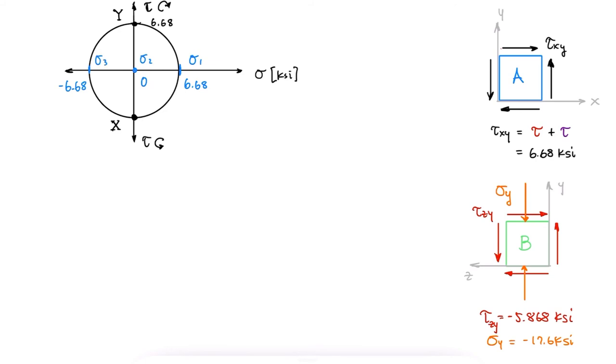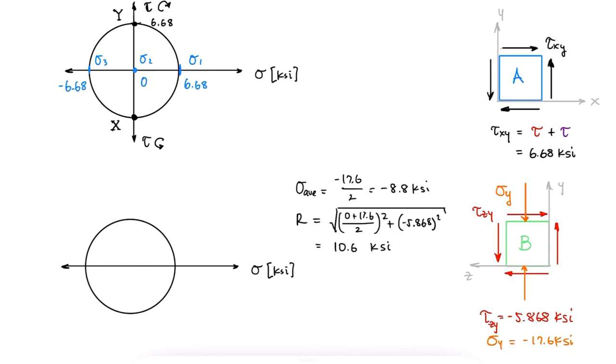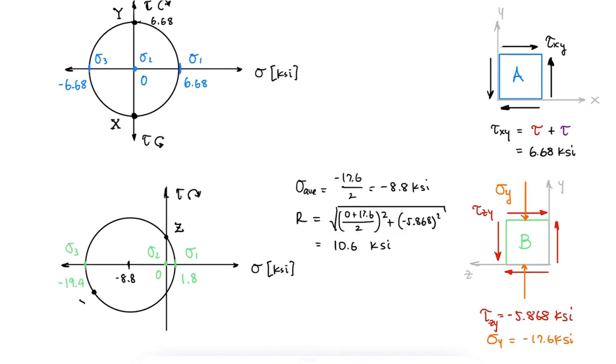And for element B, which has a sigma average of minus 8.8 and a radius of 10.6, we see that the center of the circle is located at minus 8.8, sigma 1 at the center plus a radius, sigma 2 at 0, and sigma 3 at the center minus a radius. The maximum shearing stress of element B would be the radius at 10.6 ksi.